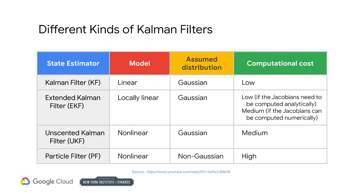There are lots of different kinds of Kalman filters. The standard one uses linear equations with Gaussian probability density functions. One that assumes a slightly more complex, locally linear function but still Gaussian is known as the extended Kalman filter, enabling modeling of slightly nonlinear functions. The next step is the unscented Kalman filter, which uses nonlinear equations with medium computational cost. Finally, the most computationally intensive version uses both nonlinear equations and does not assume that the probability density function is Gaussian.